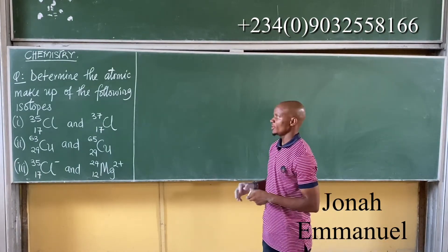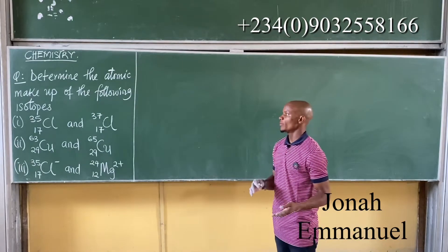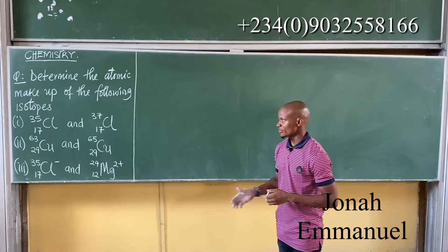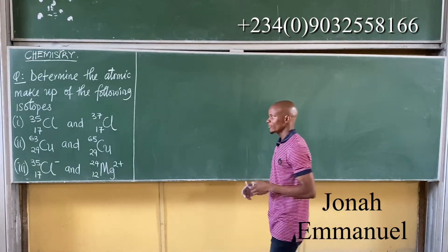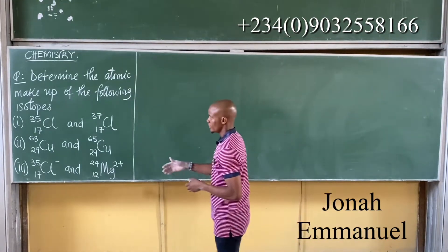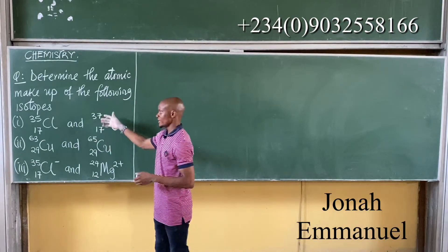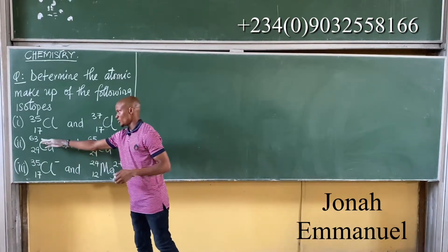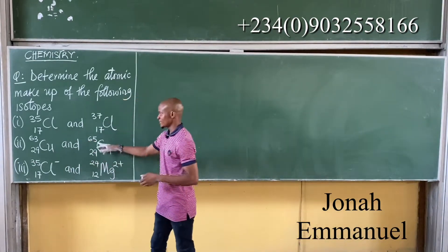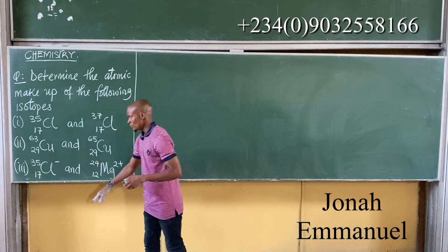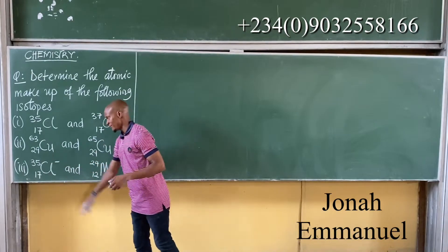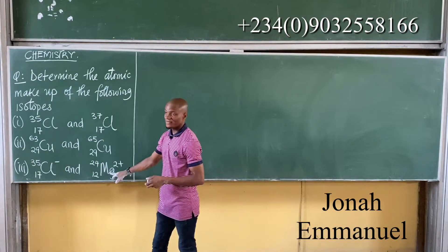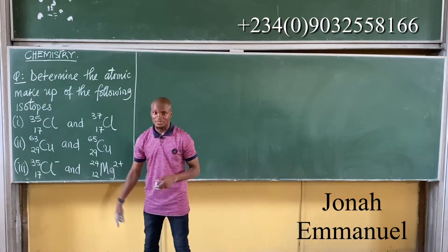The question says: determine the atomic makeup of the following isotopes. We have Chlorine-35 and Chlorine-37, Copper-63 and Copper-65, Fluorine Ion-35 and Magnesium Ion-24.